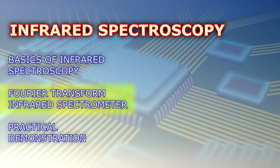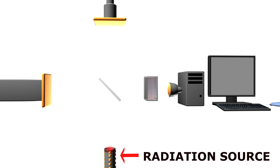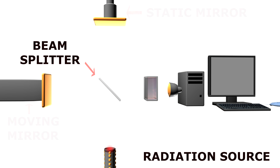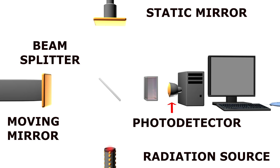In order to carry out these measurements, we can use a Fourier transform infrared spectrometer. This system consists of a radiation source, a beam splitter, two mirrors, and a photodetector. Depending on the setup, the sample is normally placed in front of the detector.